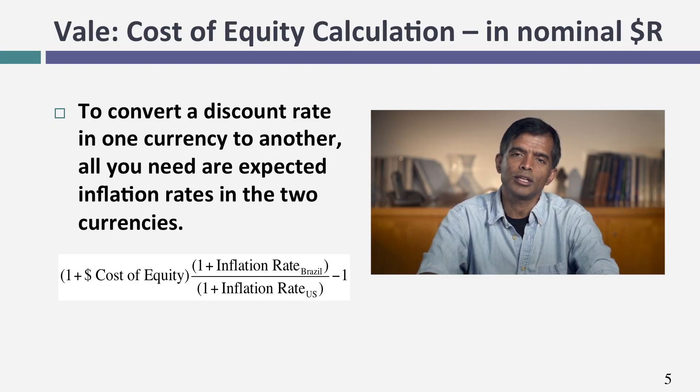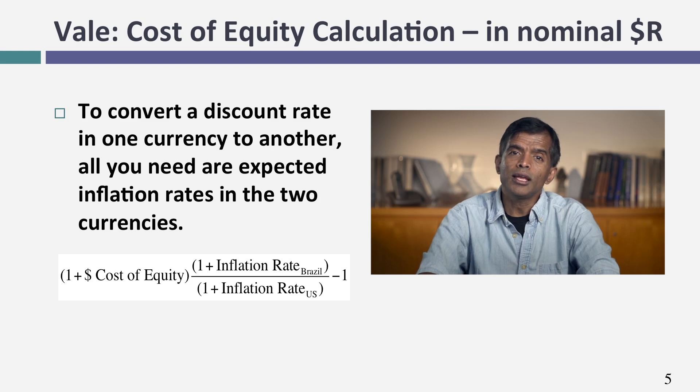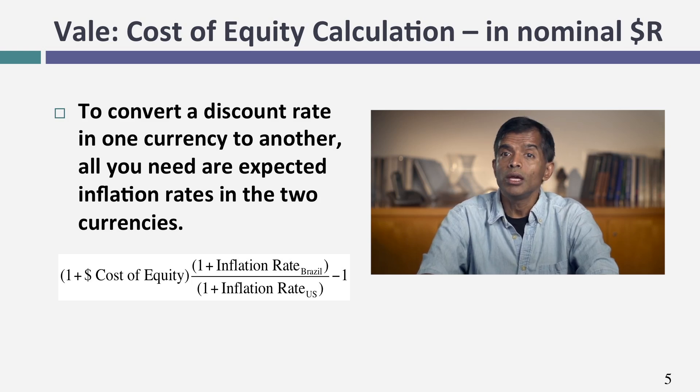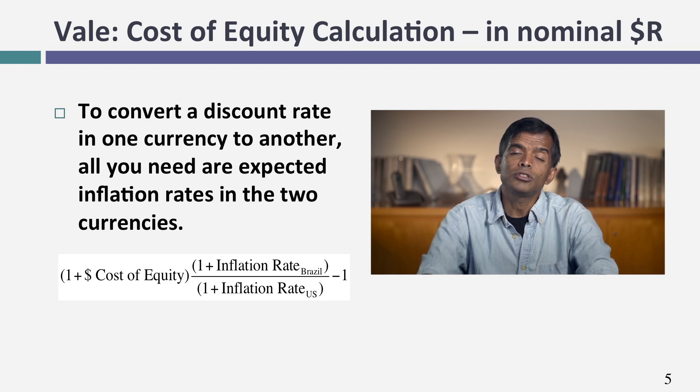Let's say after computing the U.S. dollar cost of equity, you decide you'd rather have a nominal Brazilian real cost of equity. You could go back to scratch and use the nominal real risk-free rate, but there's a shortcut: to convert the 11.23% U.S. dollar cost of equity into a nominal real cost of equity, I need two numbers — an expected inflation rate in U.S. dollars and an expected inflation rate in nominal real. The easier one is U.S. dollar inflation: I take the difference between the 10-year T-bond rate and the 10-year TIPS rate, which yields about 2% as of November 2013 (2.75% T-bond minus 0.75% TIPS).